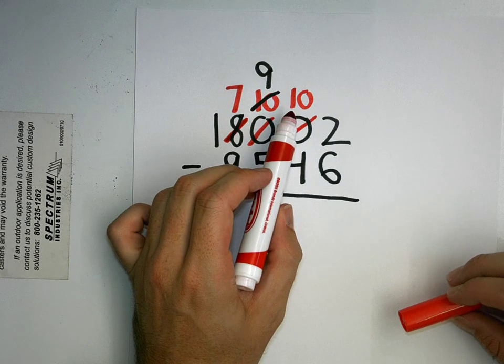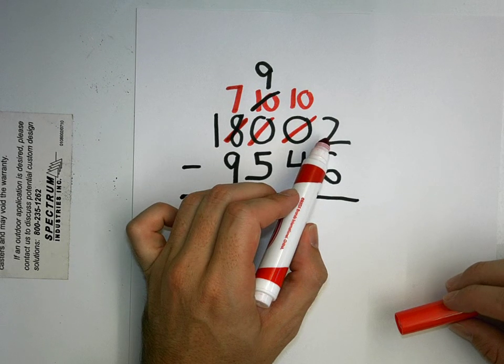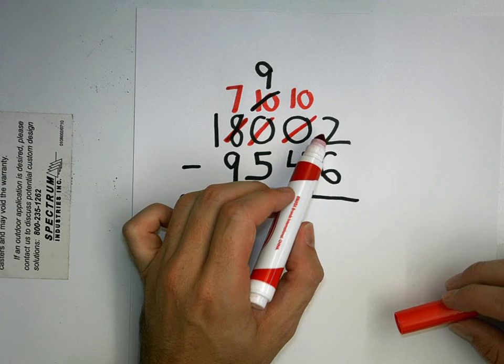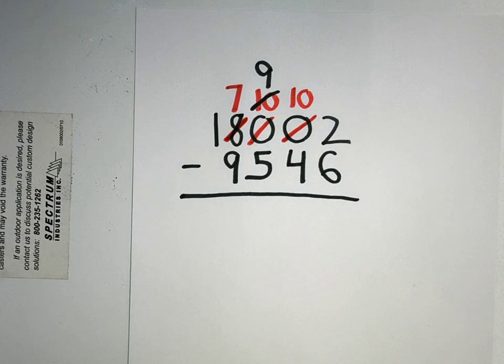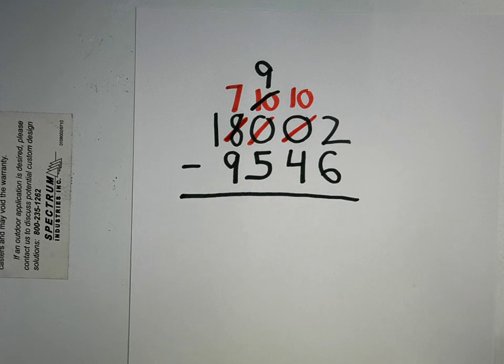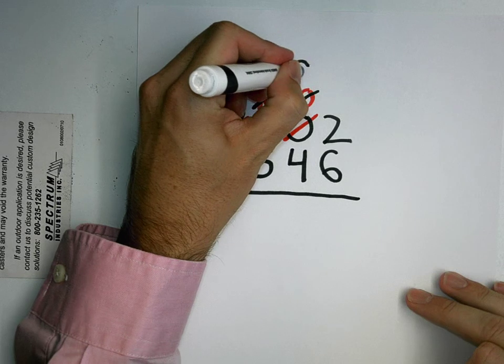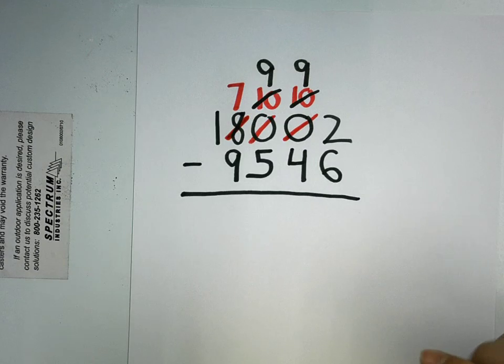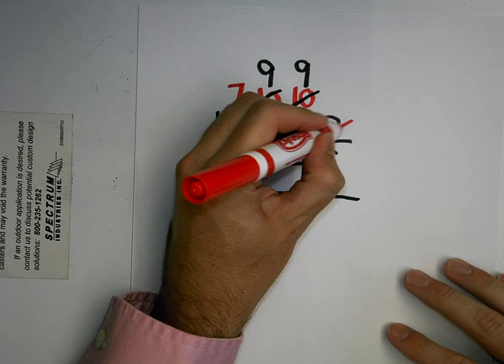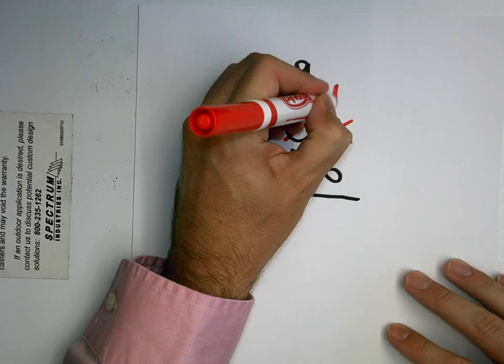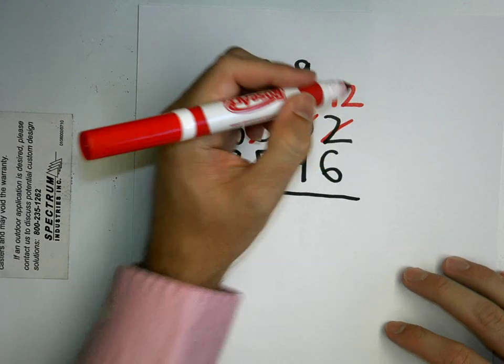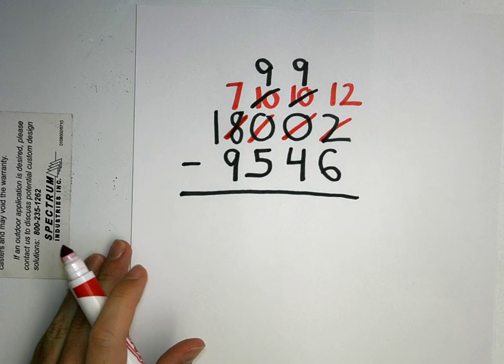And I'm still not done, because I need to get this ones place number bigger on the top than the bottom. So instead of ten tens, I now have nine groups of ten, and instead of two ones, since I moved over a ten, I now have twelve ones. That is a lot of regrouping.